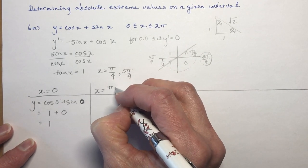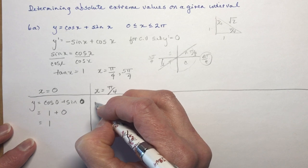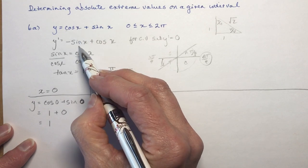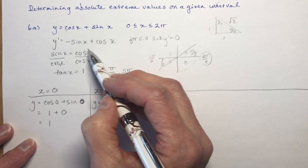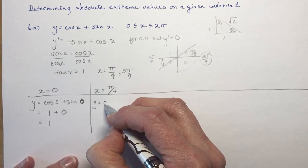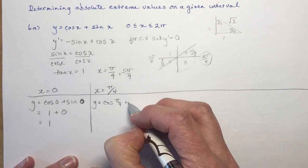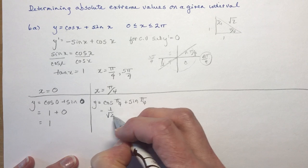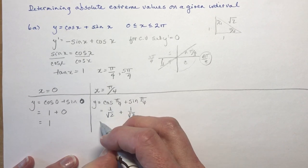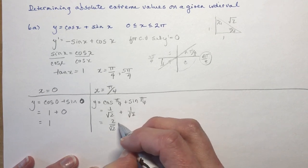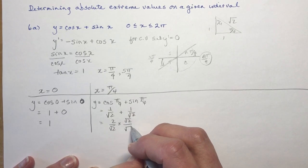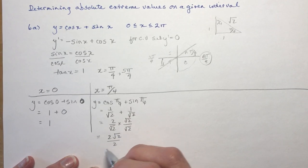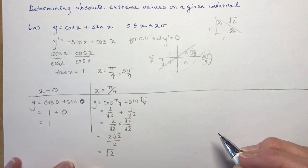Next, x equals π over 4. I plug back into the original function — don't plug into the derivative, you'd get zero. So I have cos(π/4) plus sin(π/4). Both cos(π/4) and sin(π/4) equal 1 over √2, so I get 2 over √2. Rationalizing the denominator gives 2√2 over 2, which is just √2.